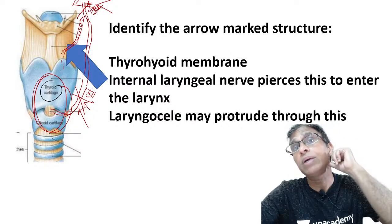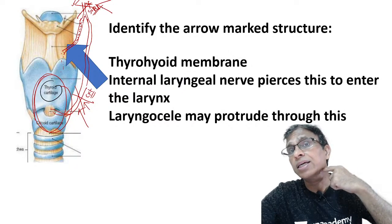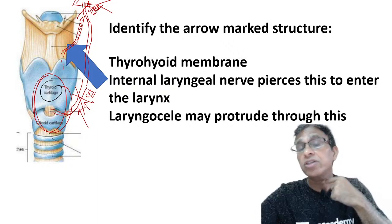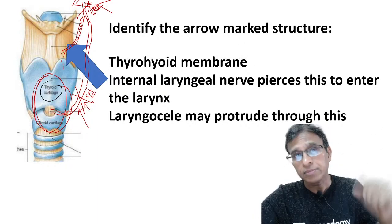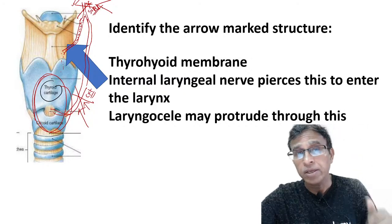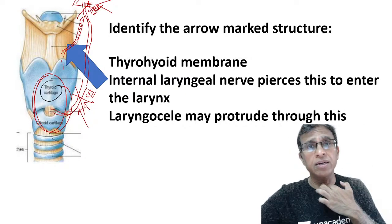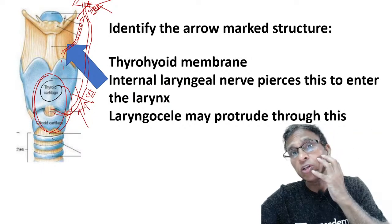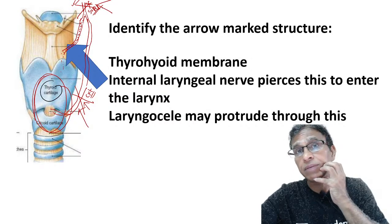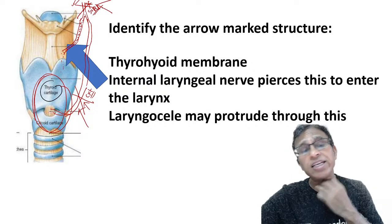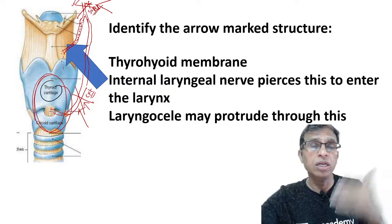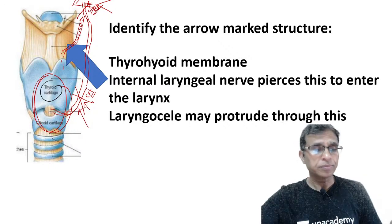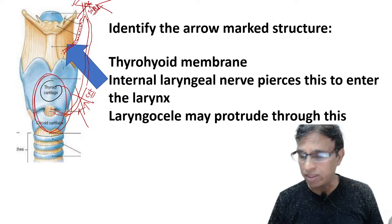The trick in exams: the same problem — cricothyroid dysfunction — can result from damage at different nerve levels depending on the surgery described. Submandibular gland surgery: external laryngeal nerve cannot be damaged; superior is implicated. Thyroid surgery: external laryngeal nerve is damaged; superior cannot be. Skull base surgery: vagus is the nerve at risk. So depending on the surgery mentioned, you must identify the correct nerve — all three can ultimately cause cricothyroid dysfunction.